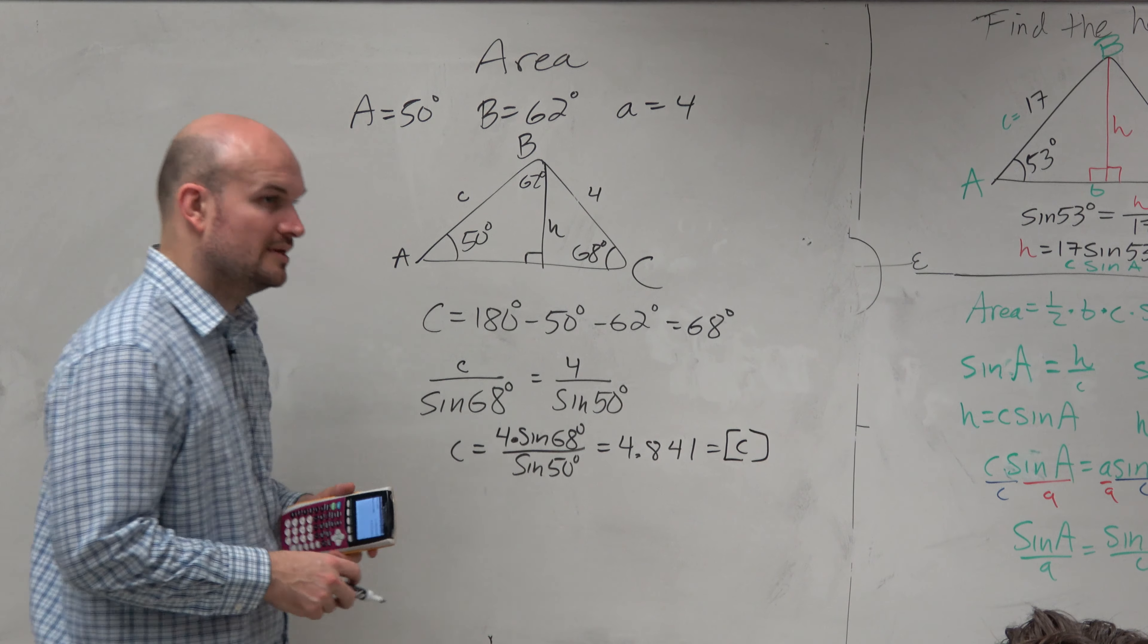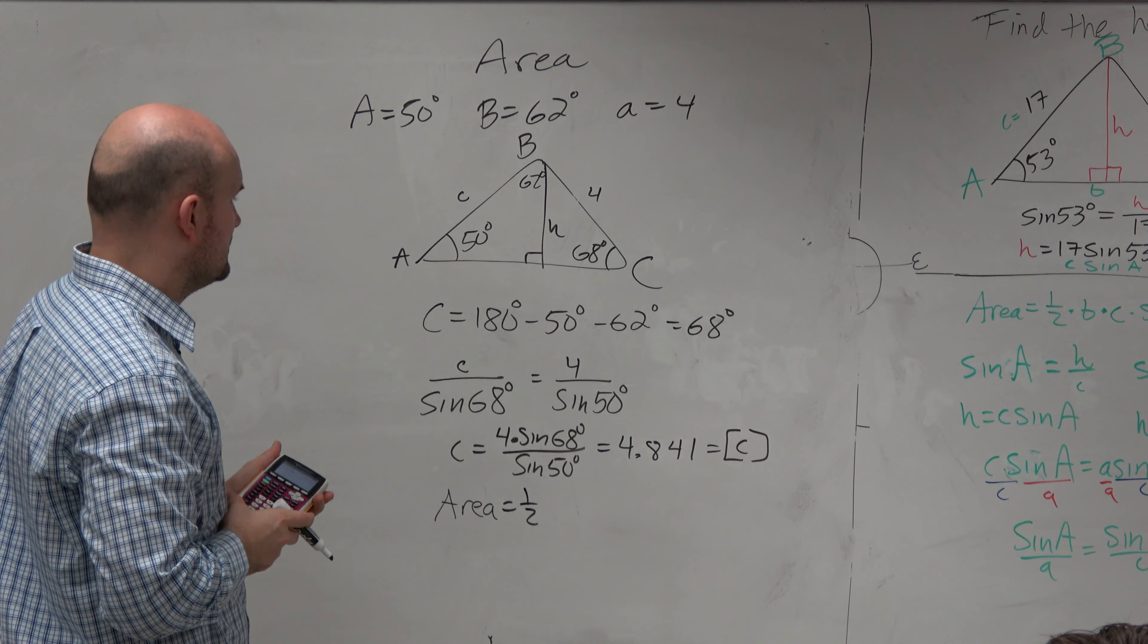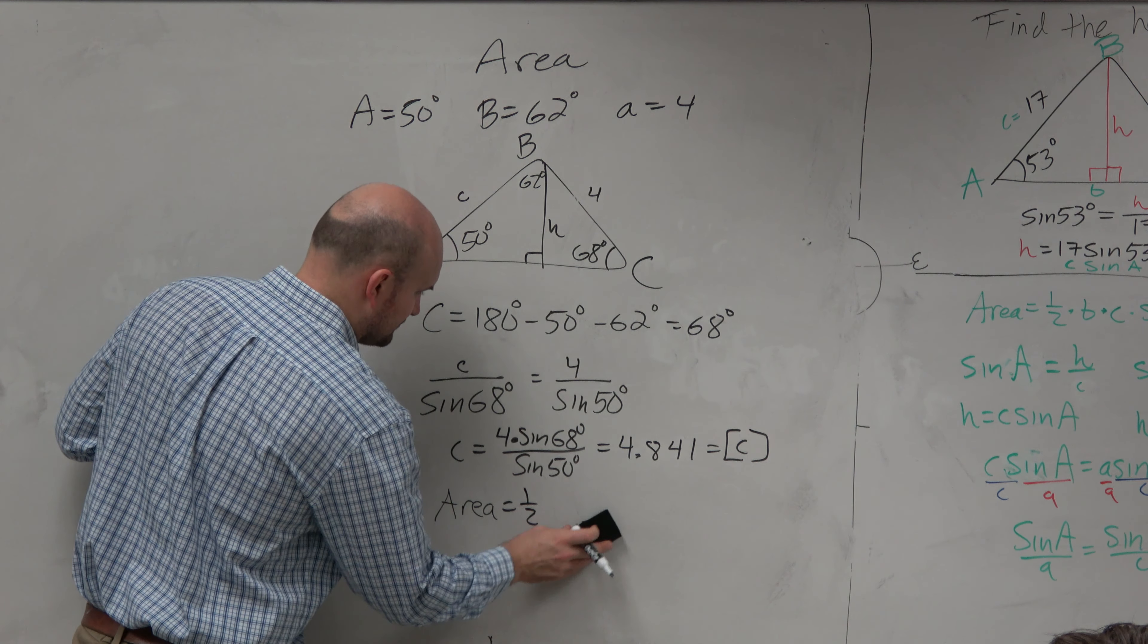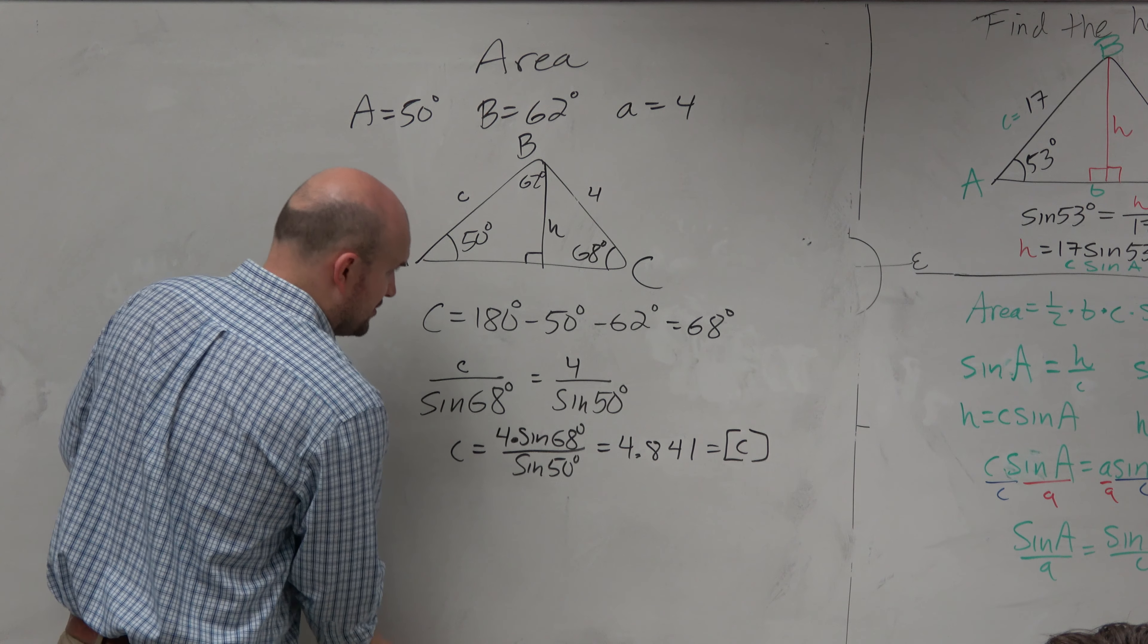I'm just going to write the alpha C in there so you guys can see, because the area is going to be 1 half B or A times. Actually, we need to figure out B, too, don't we? Crap. OK. So we've got to figure out B, too. So let's go and figure out B.